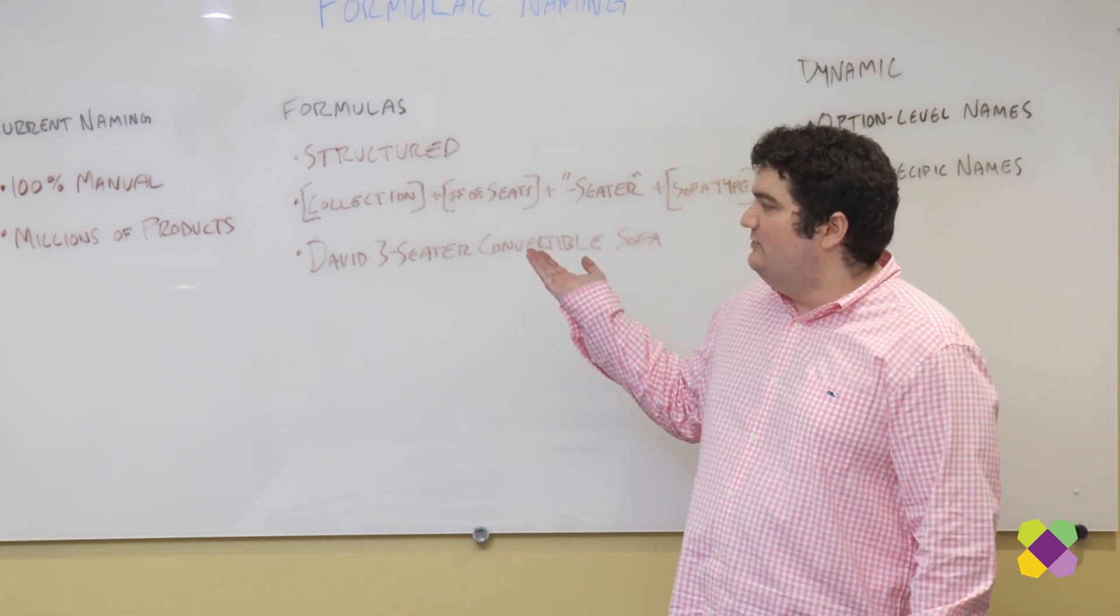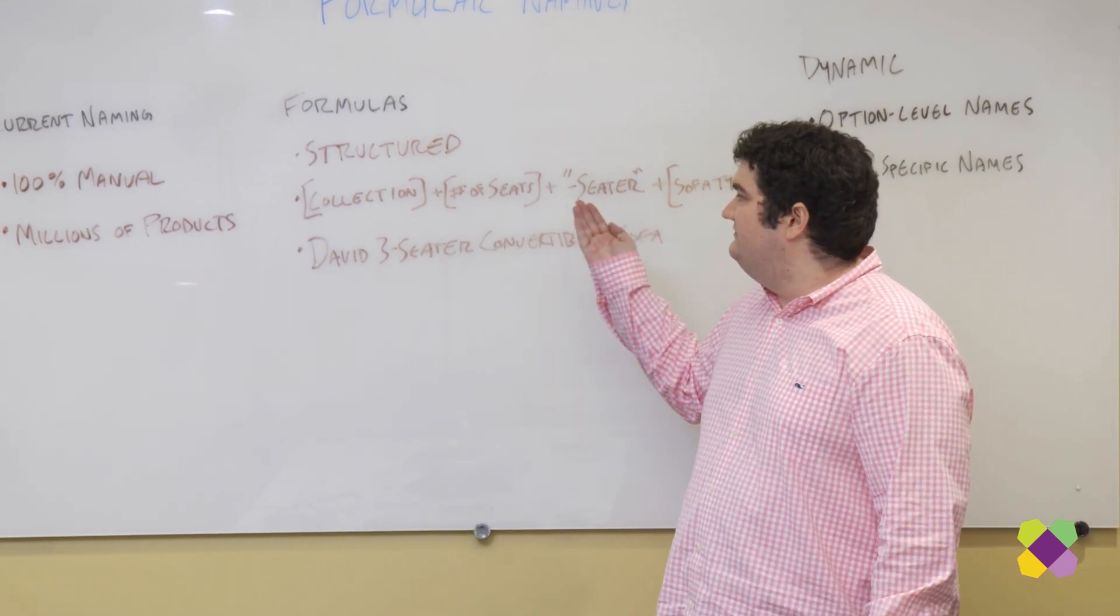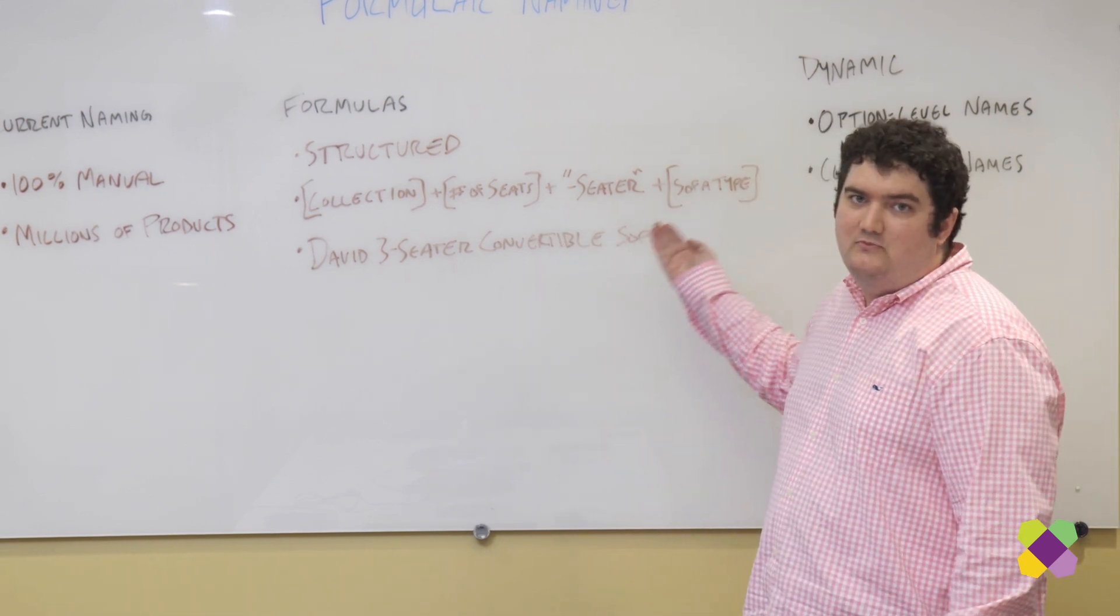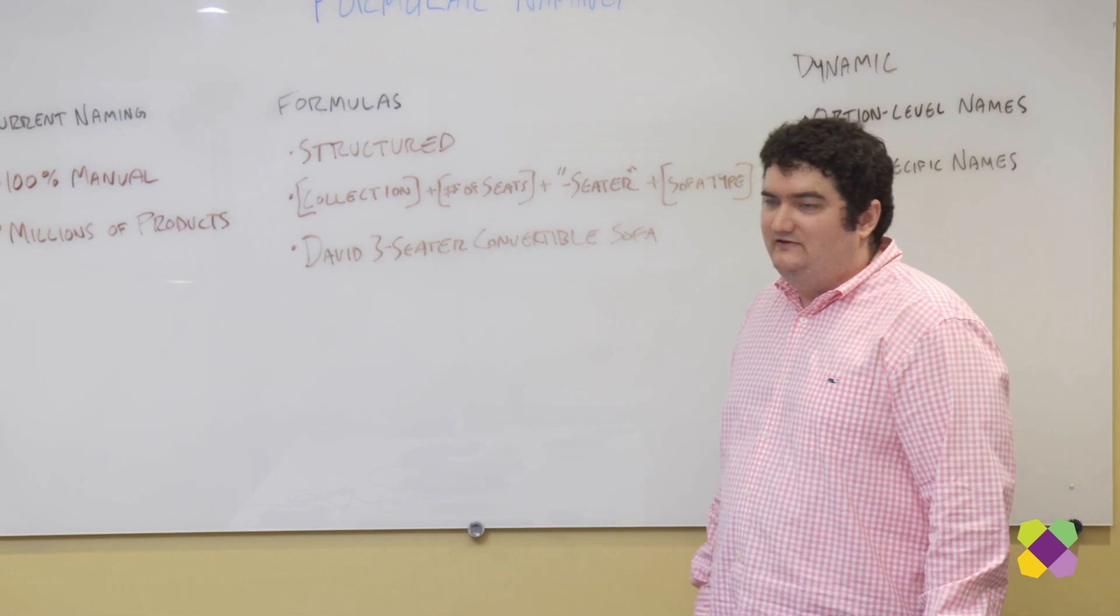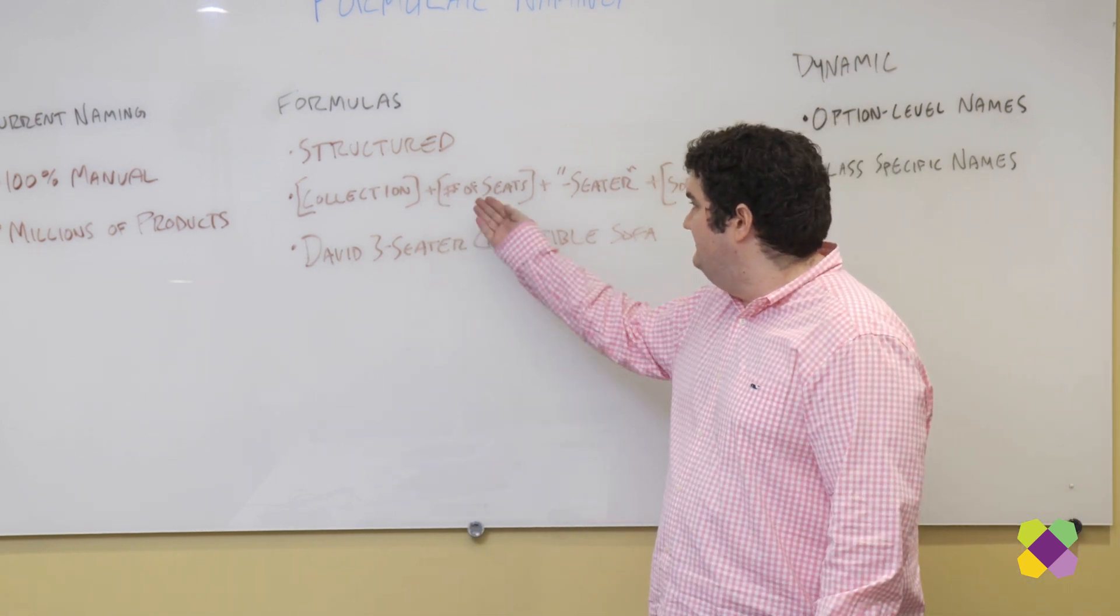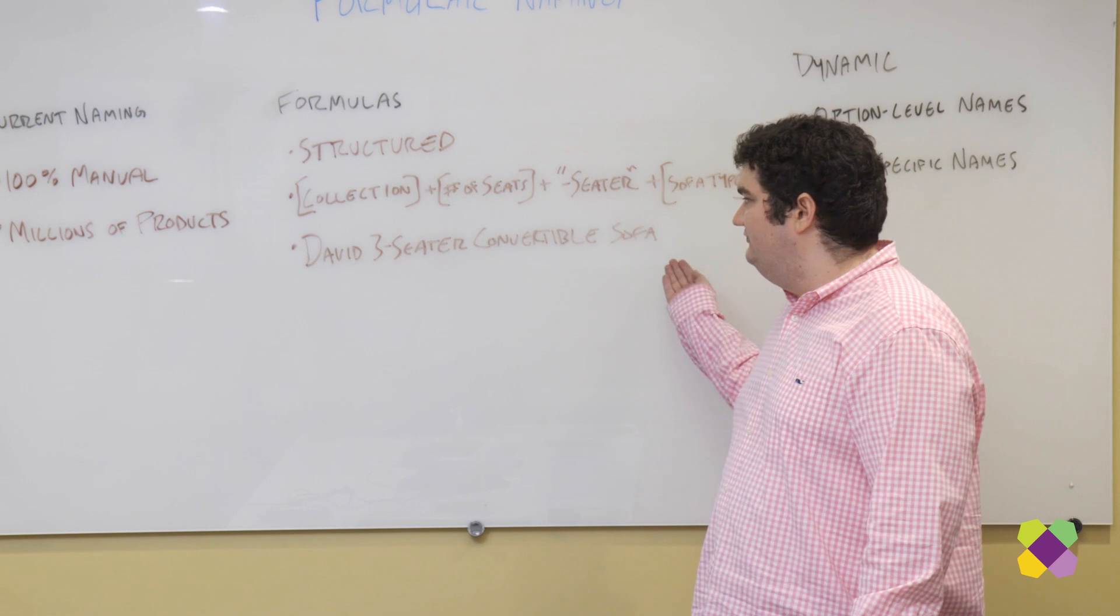In the sofas class you might come up with a name like collection plus the number of seats plus seater plus sofa type. For a given product that might end up looking something like David, the collection, three seater, the number of seats in the free text, convertible sofa.